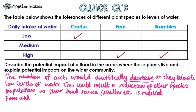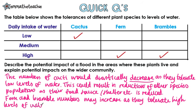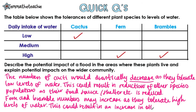Now the fern and brambles. Fern and bramble numbers may increase as they tolerate high levels of water. This could result in an increase in other species' population sizes, because their food source, shelter, or even breeding ground has increased. It's important that you mention that — that's the explanation of why the changes to the plants would affect the wider community.